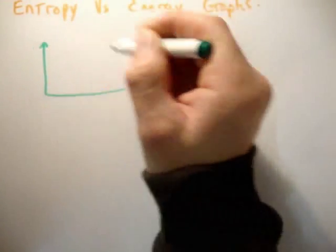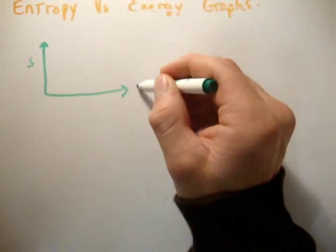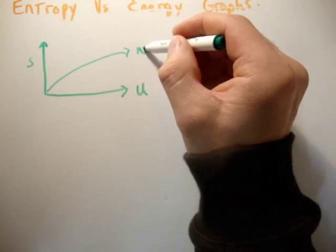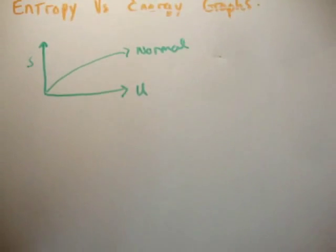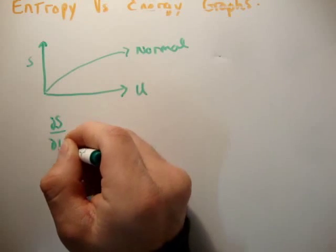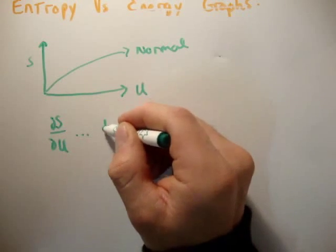Now, let's start plotting some of these graphs. So if I plot a graph like this, if I plot S versus U, okay, this is what we call normal. Okay? Because it's normal because del S del U is getting, is going down.